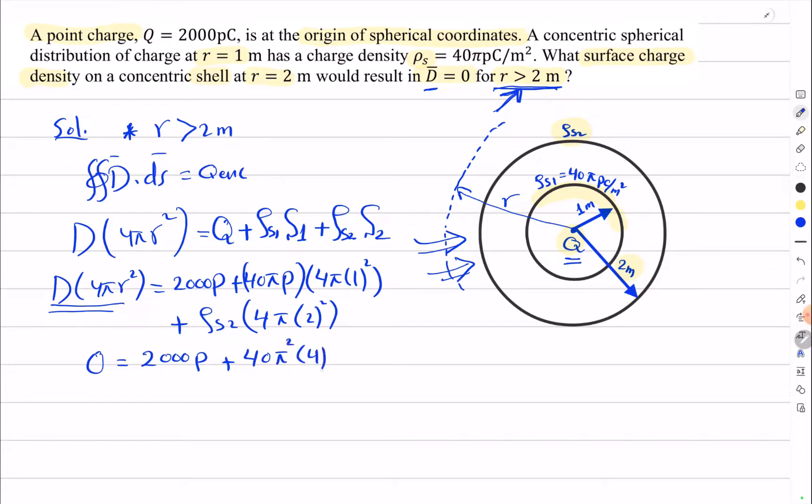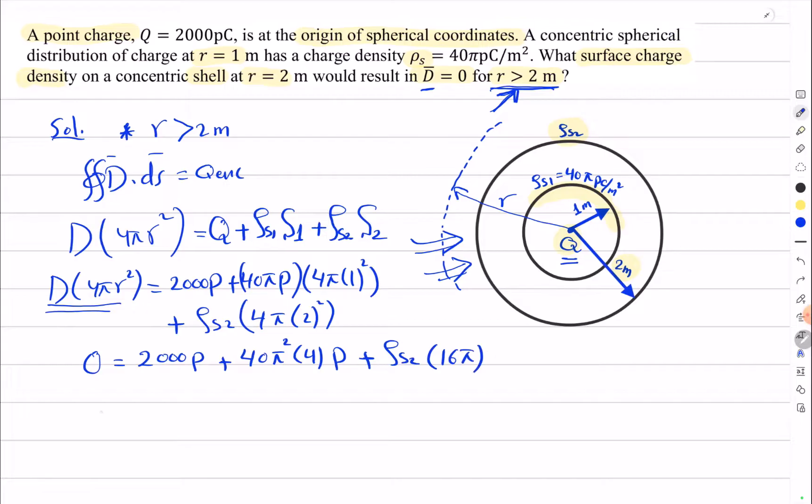Setting this equal to zero and solving: ρ_s2 equals negative 2000 picocoulombs plus 160π divided by 16π, which equals approximately negative 71.2 picocoulombs per square meter.